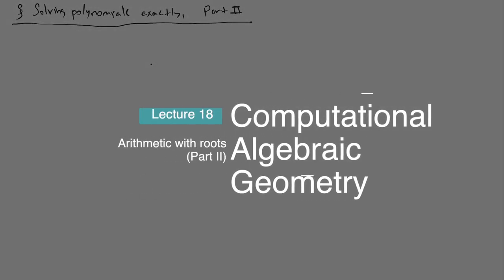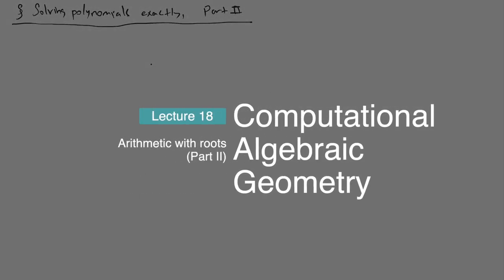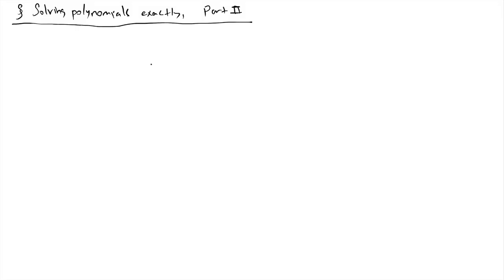Hello everyone, and welcome to another session of computational algebraic geometry. Today we will continue solving polynomials exactly — this is a direct continuation of the previous lecture. We discussed that we're solving polynomials abstractly, and therefore the solutions come to us for free. The real problem is to develop the arithmetic of our abstract roots. What we have done before was to work with a single root, and now we're going to talk about adding more than one root.